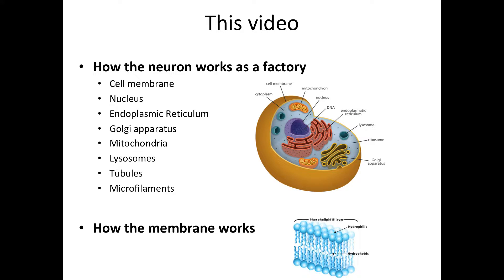In this video we are going to talk about how our neuron works as a factory. Neurons, just like a lot of other cells, are technically little miniature factories, and the product of neurons are proteins. To understand these factories, let's go over the anatomy of the cell first. In this video we will cover what is the cell membrane, the nucleus, the endoplasmic reticulum, Golgi apparatus, mitochondria, lysosomes, microfilaments, etc.